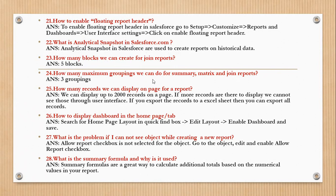How many maximum groupings can we do for summary, matrix, and joint reports? Three groupings for joint reports. How many records can we display on a page in reports? We can display up to 2,000 records on the page. If more records need to be displayed, we cannot see those on the user interface. If you export the records to Excel, then you can export all records.